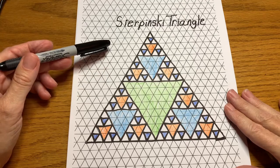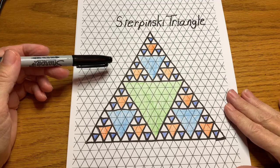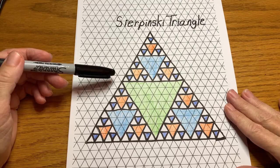A fractal is a type of mathematical shape that is infinitely complex. They keep repeating forever, usually getting smaller with each iteration.